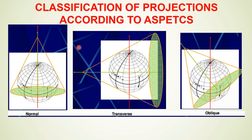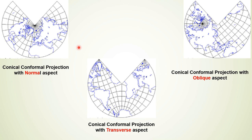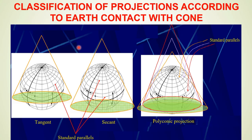This is the classification of projection according to aspects — normal, transverse, and oblique — and accordingly the map appearance changes. Regarding contact with the developable surface, it may be tangent, secant, or polyconic. In the secant case, there are two standard parallels where the developable surface touches the globe.